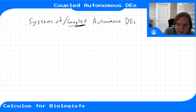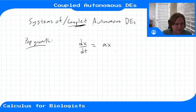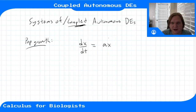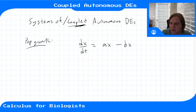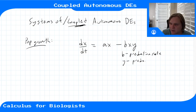A lot of systems we've been modeling, like bacterial population growth, say we have some population x whose rate of change is proportional to its current population level — it just grows in a vacuum with no interaction. But let's say the bacteria are preyed on by some type of amoeba. Then its rate of change would be a natural growth rate minus a predation term: minus b·x·y, where b is the predation rate, x is the prey population, and y is the predator population.